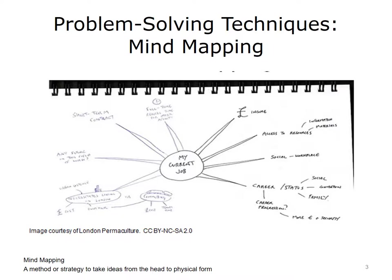Mind mapping is the name given to a method or strategy that makes it easier to put thoughts into graphic form or to map your ideas. In short, mind mapping is a sketching or drawing that takes ideas from the head and puts them into a physical representation.